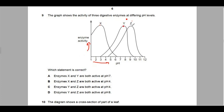This graph is for enzyme X, this graph is for enzyme Y, and this one is for enzyme Z. So which statement is correct? Enzymes X and Y are both active at pH 7. Let's look at pH 7. We've got Y, you see it's active, there is some activity, but enzyme X, not really, enzyme X is at 6 here. So enzyme X is not active at pH 7, this is wrong.